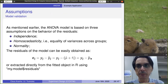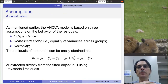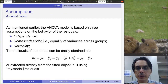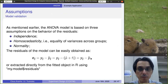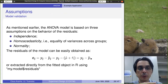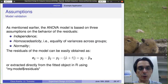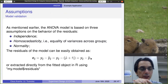So let's go through the assumptions. As we mentioned before, the ANOVA model is based on three assumptions on the behavior of the residuals. The first assumption is independence — in other words, the residuals do not depend on each other for their values. They are all errors of the observations drawn from a normal distribution with independent samples.